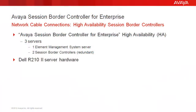This information applies to high availability Avaya Session Border Controllers. High availability Avaya Session Border Controller for Enterprise configurations include three servers: one separate single EMS that controls and manages, and two separate active and standby SBCs.